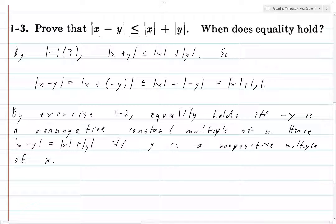This kind of makes sense if you think about the real line. When would the distance between x and y be equal to the distance to x plus the distance to y? Well, on a number line we've got 0 here and x here.